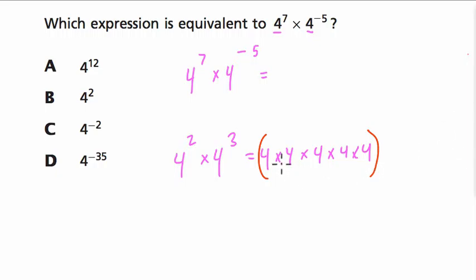And instead of being 4 squared and 4 to the 3rd, we can think of that as 4 to the 5th. It's 5 4s. So, 2 plus 3 is 5.